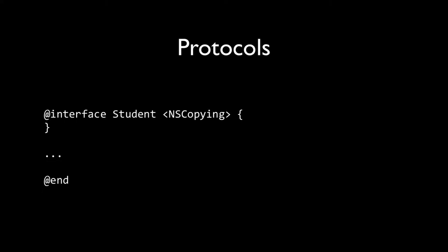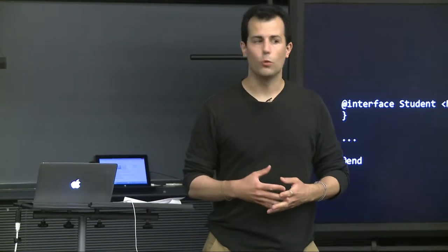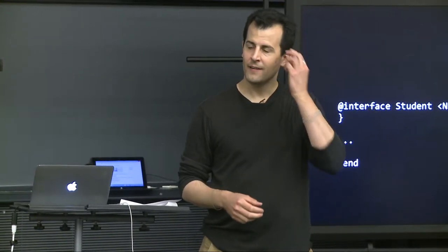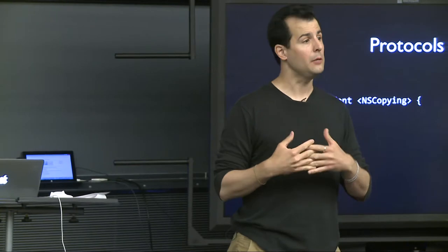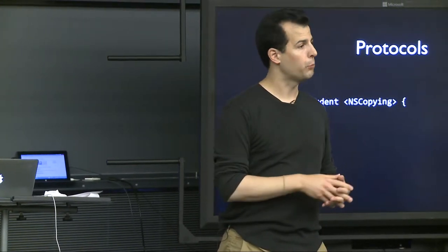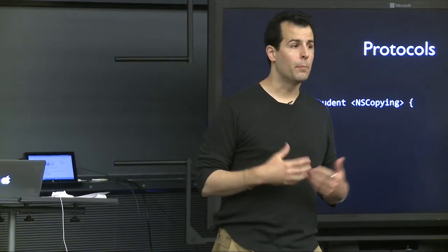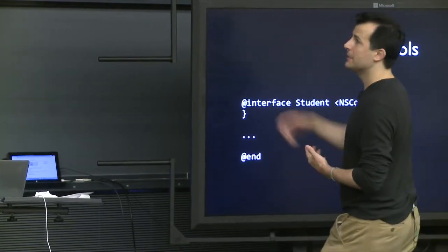Protocols allow you to define a set of methods that should be implemented by a class that adheres to that protocol — effectively an interface, as in Java. It's a set of methods you promise to implement if you declare yourself as adhering to that protocol. Methods are optional by specification but required by default. The compiler will warn you if you say you're implementing a protocol but forget to implement its required methods.